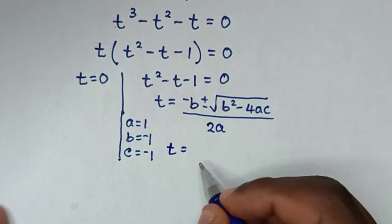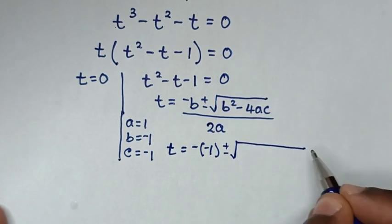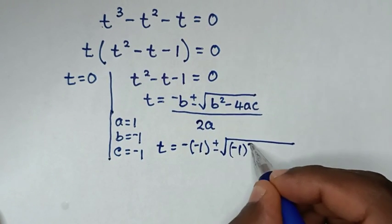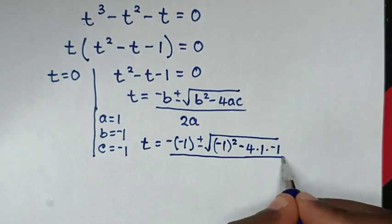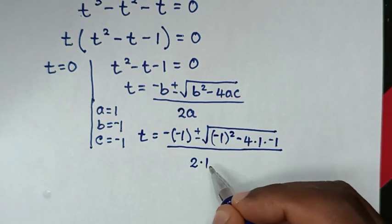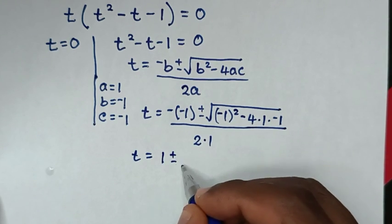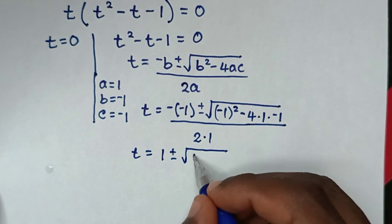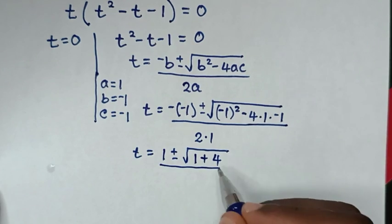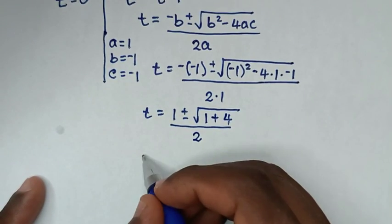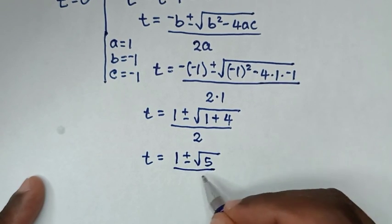Then t equals negative b, which is negative 1, so positive 1, plus or minus square root of b squared — which is negative 1 squared, that is positive 1 — minus 4 times a (1) times c (negative 1), which is positive 4, over 2 times a (1), which is 2. This gives t equals 1 plus or minus square root of 5, over 2.